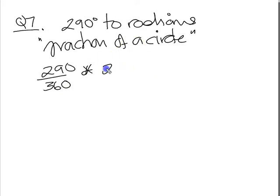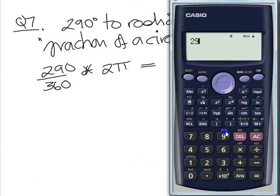Of is times the circle in radians would be 2 pi. So that's that fraction of 2 pi then. So it's 290 divided by 360 times 2 times pi.